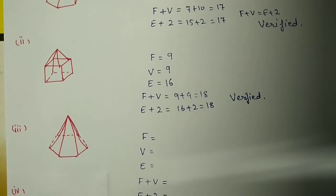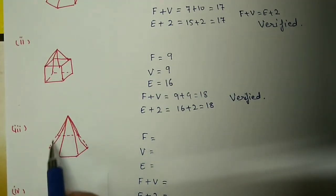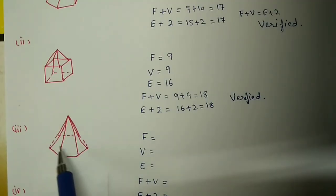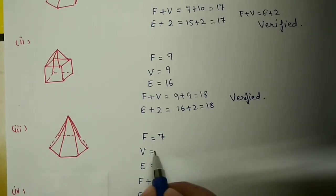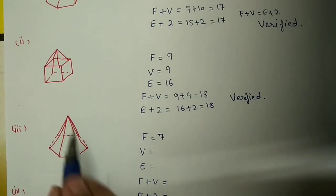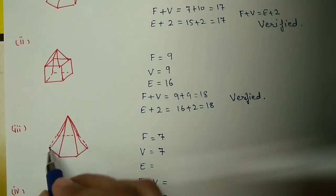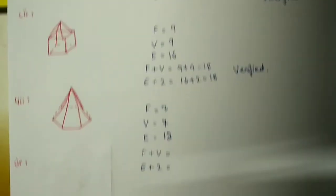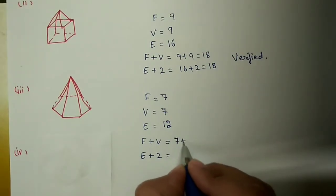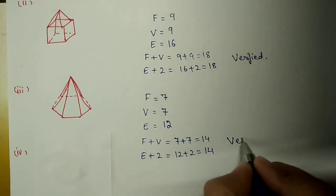Third figure is a hexagonal pyramid. The base is a hexagon and all triangles meet at a point. Faces: six triangles plus one base - seven faces. Vertices: six at base plus one top - seven vertices. Edges: six along the base plus six slant edges - twelve edges. Substituting: 7 plus 7 equals 14, and 12 plus 2 equals 14. So this one is also verified.